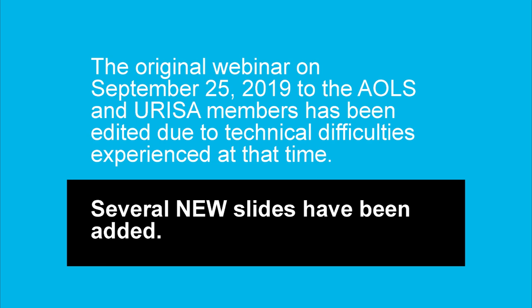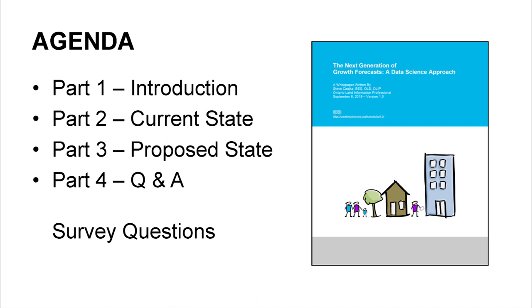Even though we experienced technical difficulties, this presented a real opportunity for me to explore more of the areas of data science in this presentation, now that the one-hour time limit is no longer in effect. The agenda: Part 1 is a basic introduction; Part 2 is the current state of growth forecasting; Part 3 is the proposed state — the most important part — which talks about the data science approach; and Part 4 is Q&A. We've also sprinkled in some survey questions throughout Parts 1, 2, and 3.